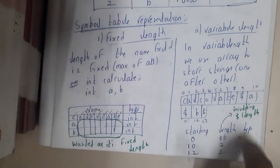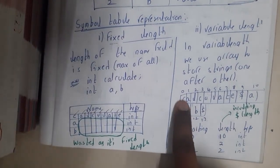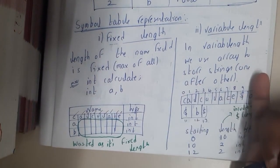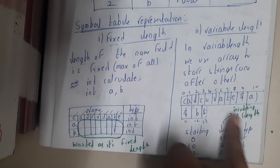So calculate$ is 10, a$ is 2, b$ is 2. I hope everyone got a clear idea on symbol tables, the purpose of symbol tables, and symbol table representation.